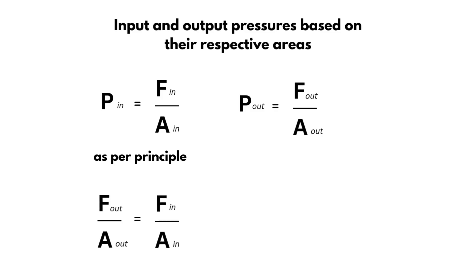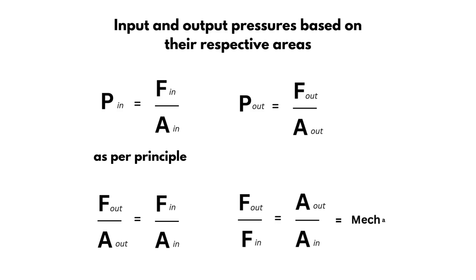Therefore, output force divided by input force equals output area divided by input area. The ratio of the areas involved is referred to as the mechanical advantage.